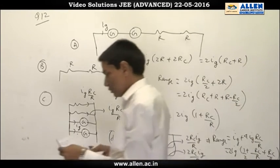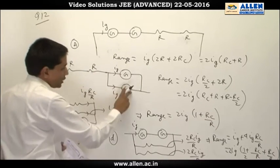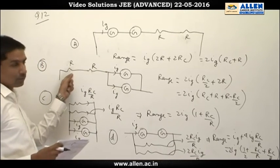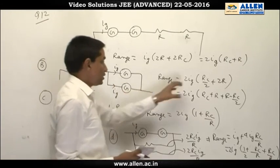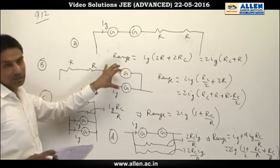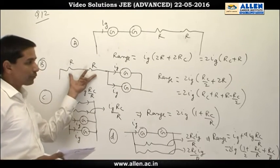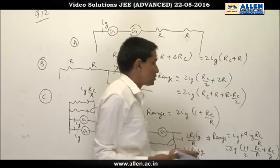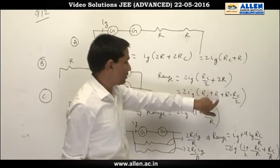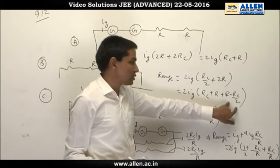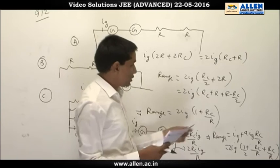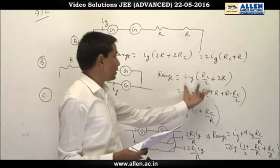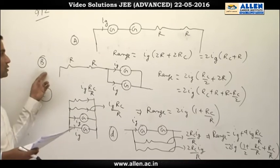In option B, the voltage range is when two resistances are connected in series and two galvanometers are connected in parallel. Since each galvanometer branch gets I_G, this combined branch gets 2I_G. The voltage drop becomes 2I_G times the equivalent resistance: R_C/2 in the galvanometer branch and 2R for the resistors. Rearranging, we get 2I_G(R_C + R) plus an additional positive term R − R_C/2, which is always positive since R_C < R. So option B gives a greater range than option A. Option B is correct, A is not.